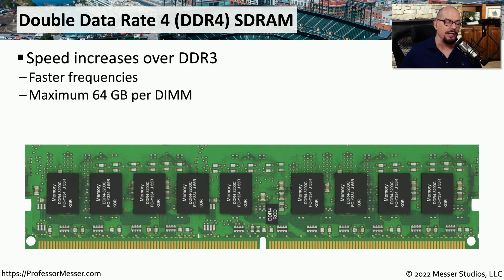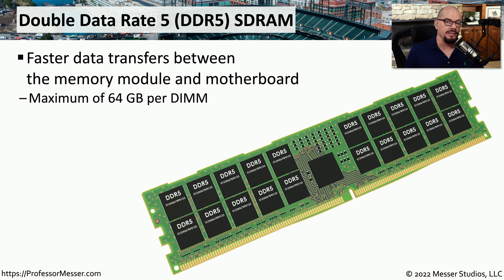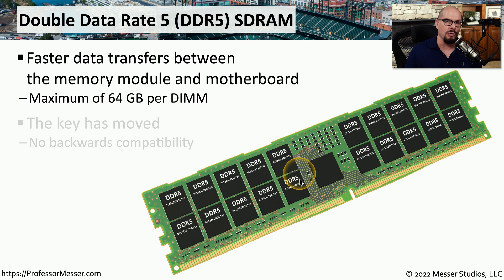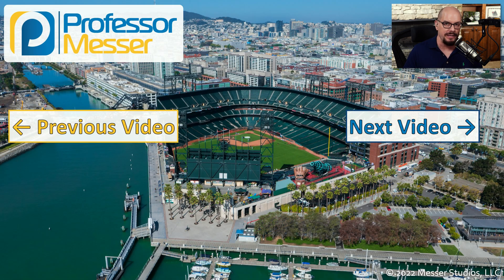On newer systems you may find DDR4, which increases speed over DDR3 and, perhaps more importantly, increases the maximum storage per module to 64 gigabytes. DDR4 is not backwards compatible with previous versions, so you'll need a motherboard that supports it. Some systems also support DDR5, which still has a maximum of 64 gigabytes per module but offers faster throughput than DDR4. The notch position on DDR5 has moved, so DDR5 memory can only be used on a motherboard specifically designed for DDR5.